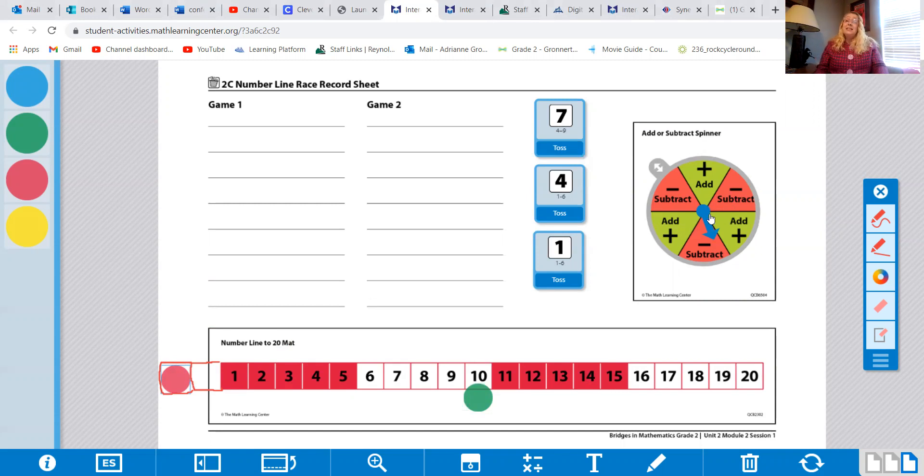The first thing my partner does is spin the spinner. They also got subtract. They're going to do the same thing as I did and roll two dice. So let's see what they get. Five and one. That's six. So they're saying 10 take away 6. One, two, three, four, five, six. They landed on 4.